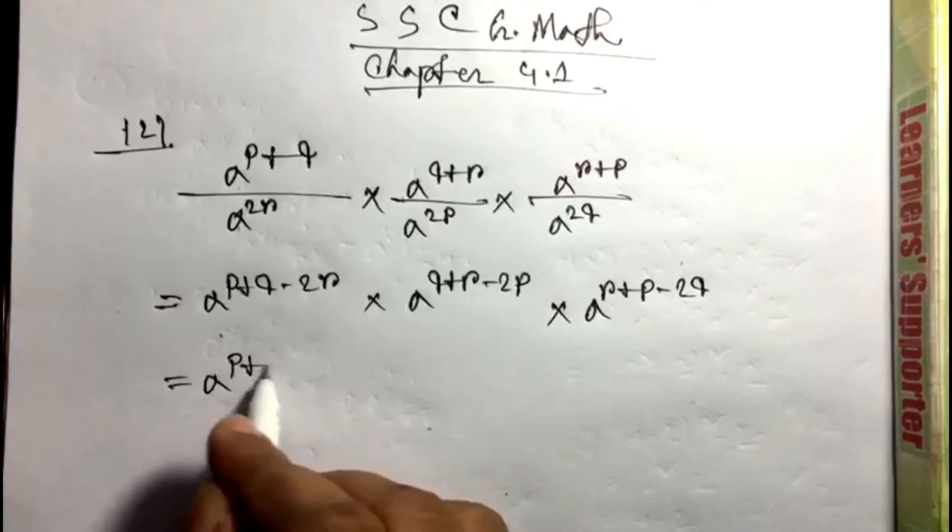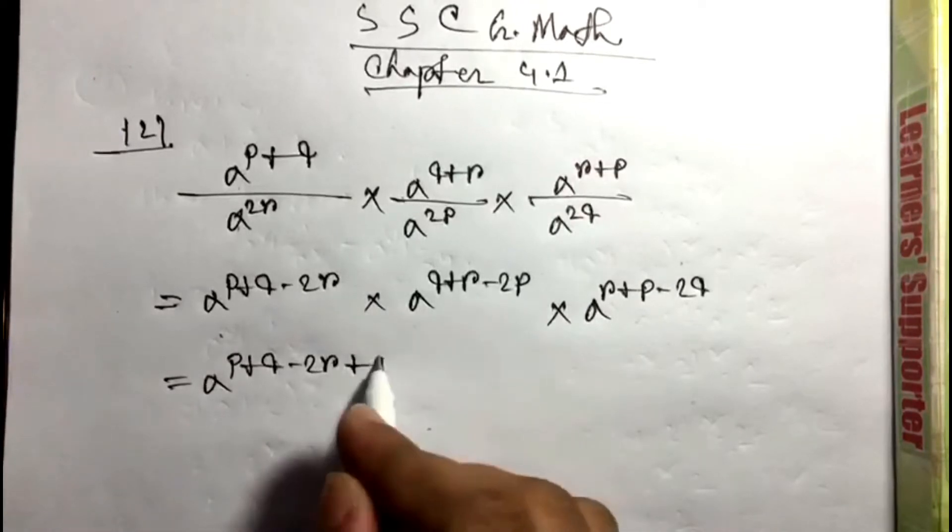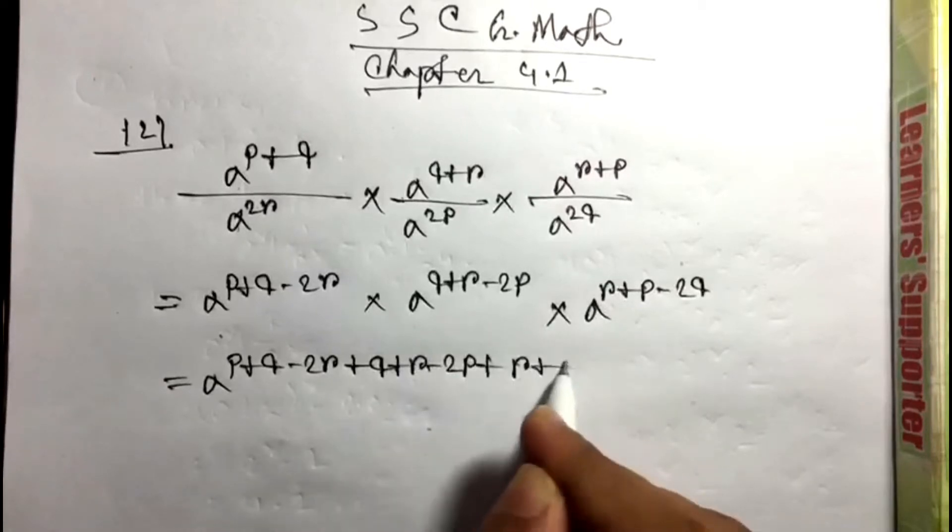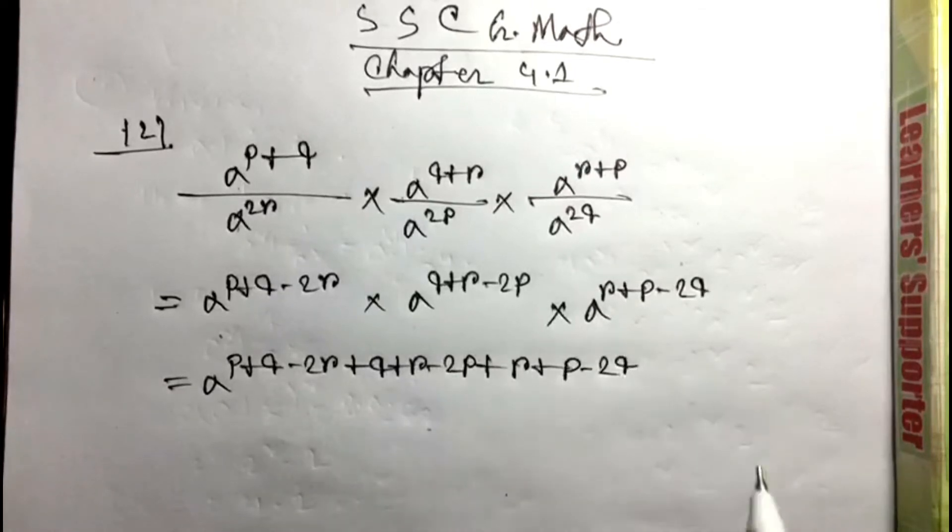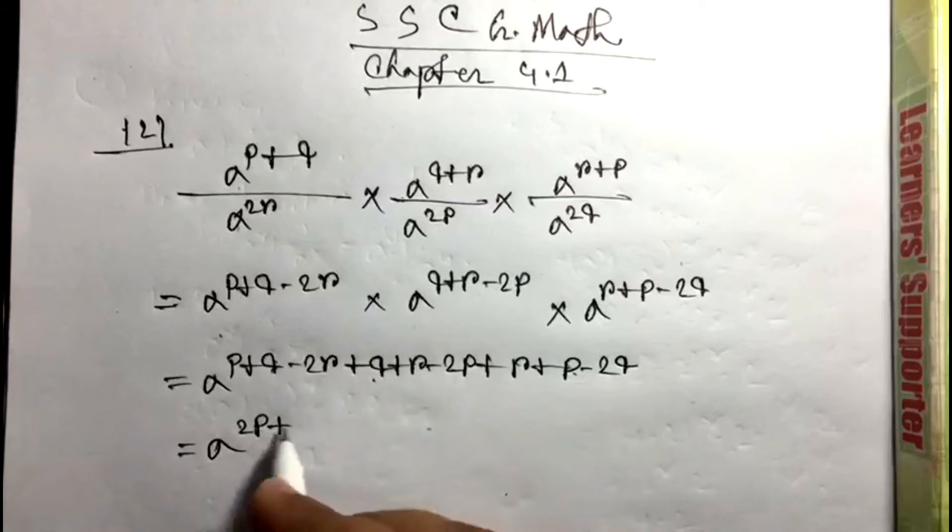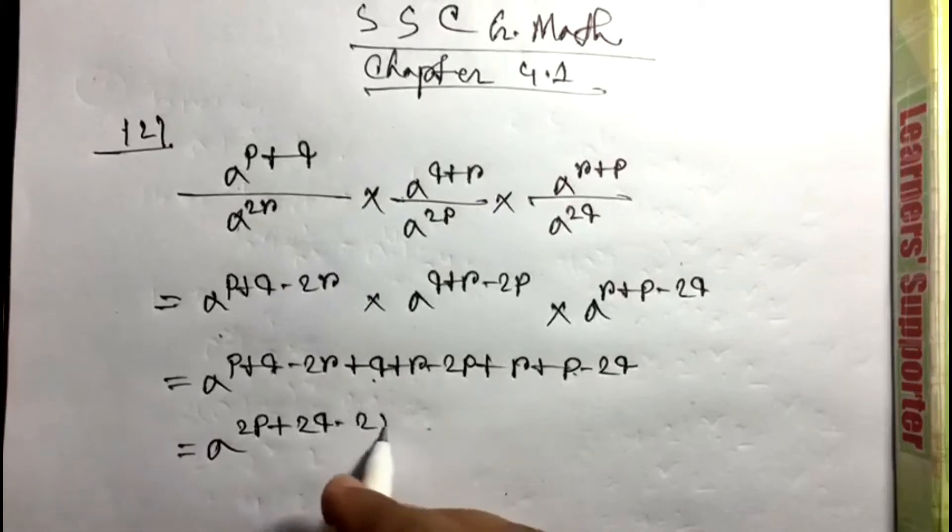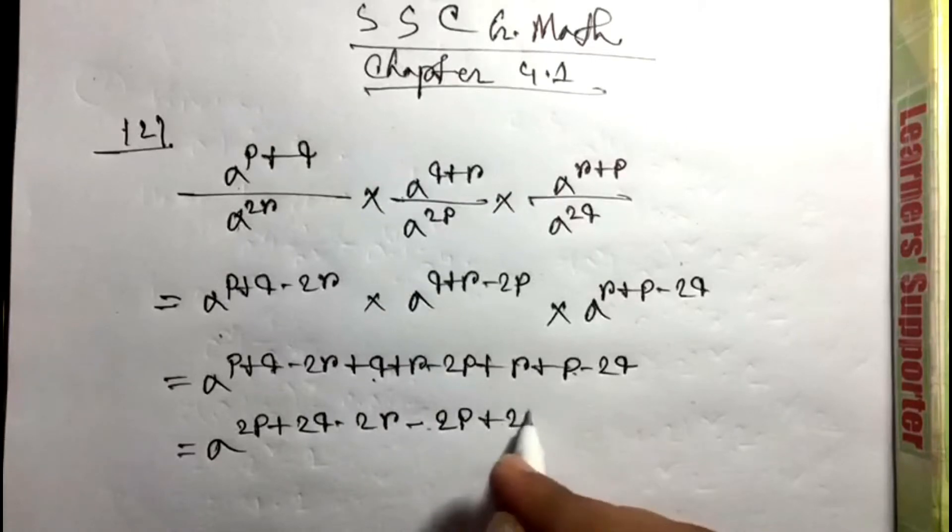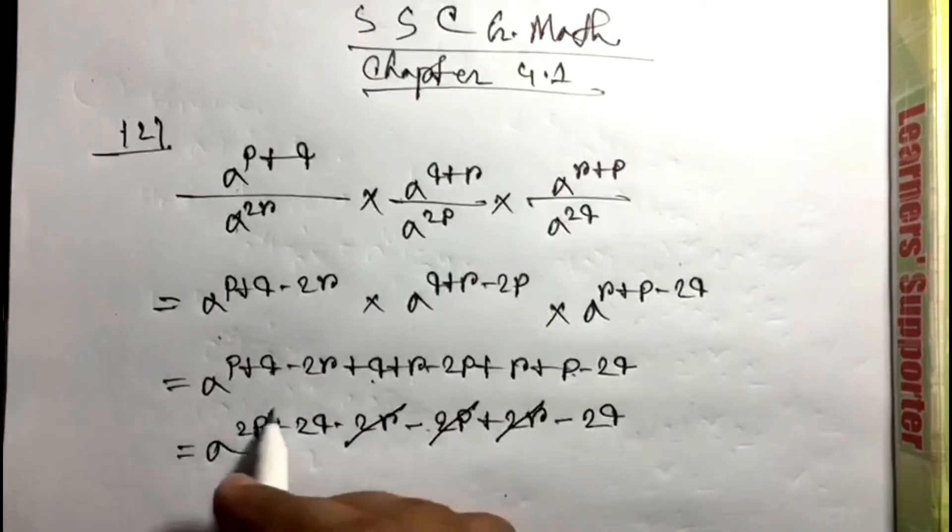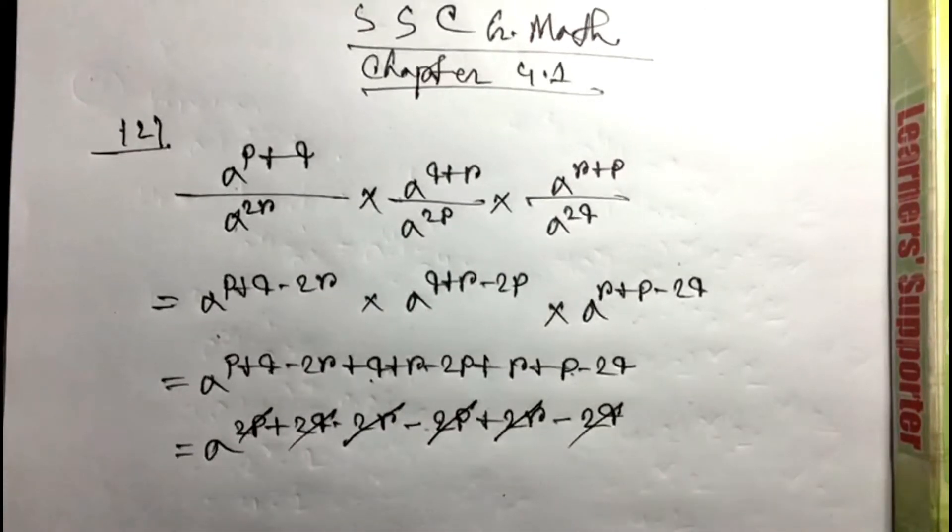Now base same, so I'll link: a to the p plus q minus 2r plus q plus r minus 2p plus r plus p minus 2q. p, 2p, q, q, 2q, minus 2r, minus 2p, plus 2r, minus 2q. The plus minus cancel, plus minus cancel, plus minus cancel - the whole element cancel.